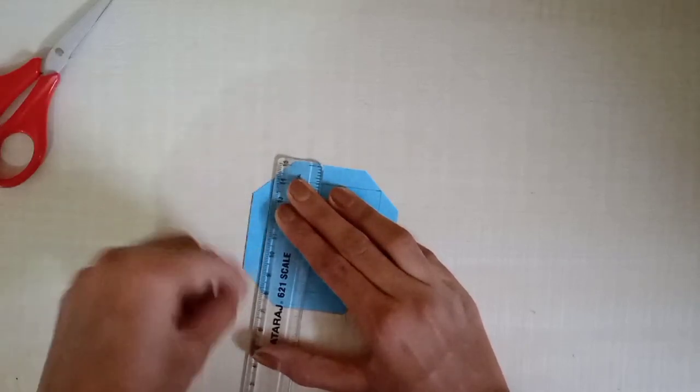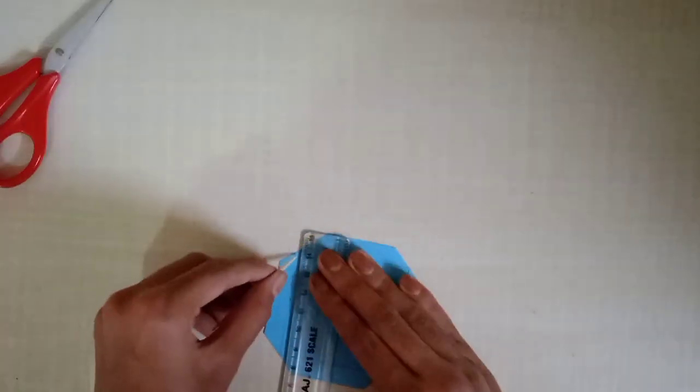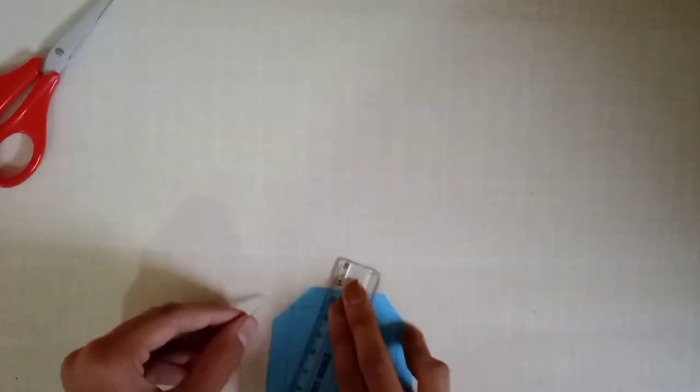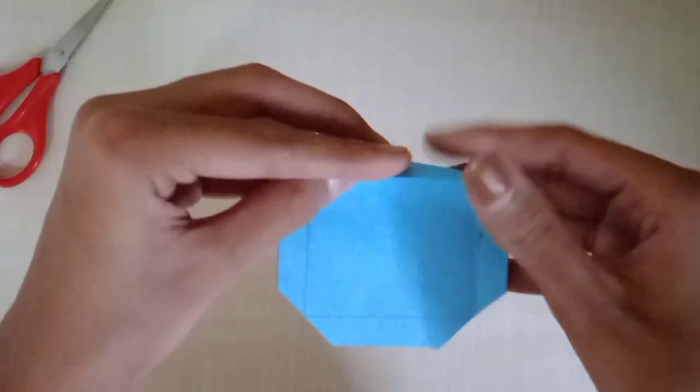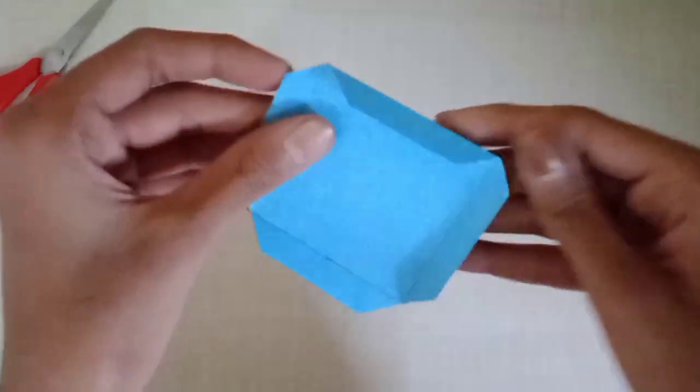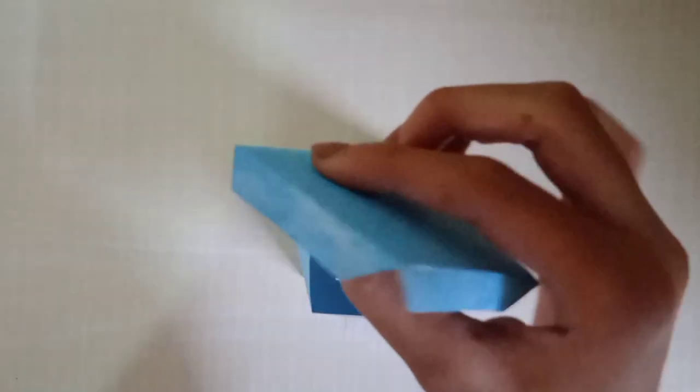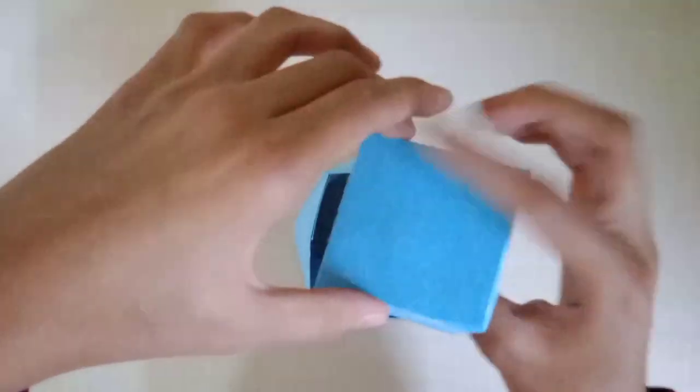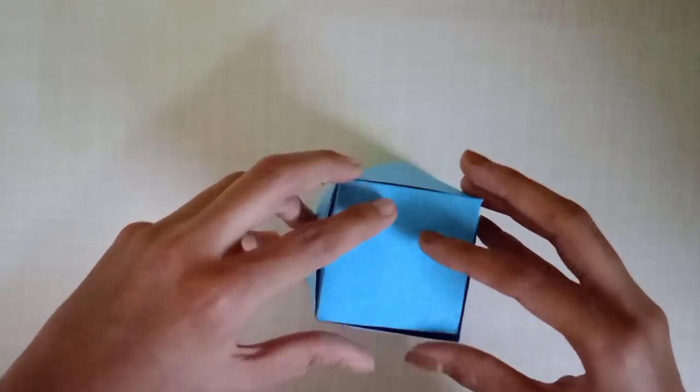Now again with the help of toothpick and scale make crease and fold your paper. Apply glue on all the 4 sides and spread it. Then stick all these 4 sides properly by pressing it inside.